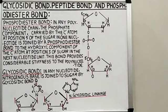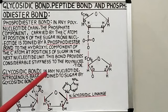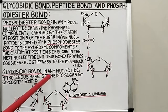Next is the glycosidic bond. In spite of joining various monosaccharide units, the glycosidic bond is also found in nucleotides.